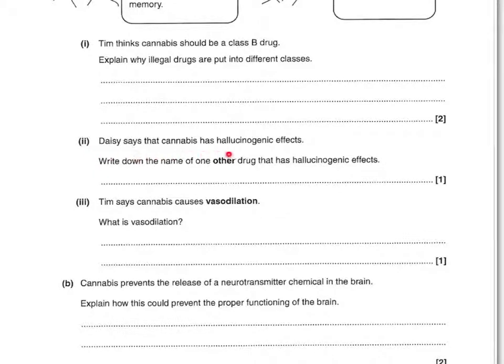Next question: Daisy says cannabis has hallucinogenic effects — write down one other drug that has these effects. That's LSD, but also magic mushrooms, PCP, or ketamine would get the mark. You don't get a mark for cocaine, heroin, alcohol, or ecstasy. Tim says cannabis causes vasodilation — what is vasodilation? That's the widening of the blood vessels. You could also say the widening of arteries or capillaries, or that blood vessels dilate, open up, expand, or get bigger — all of those will get you that one mark.